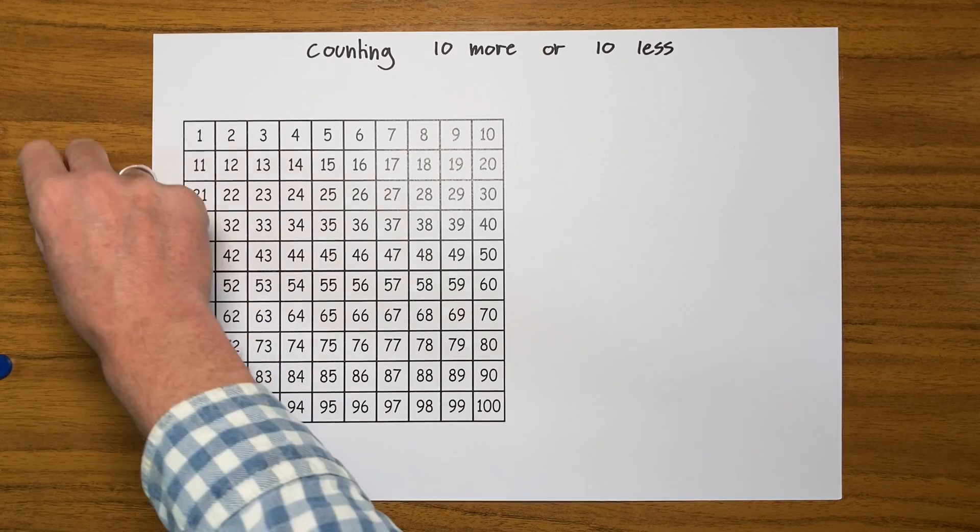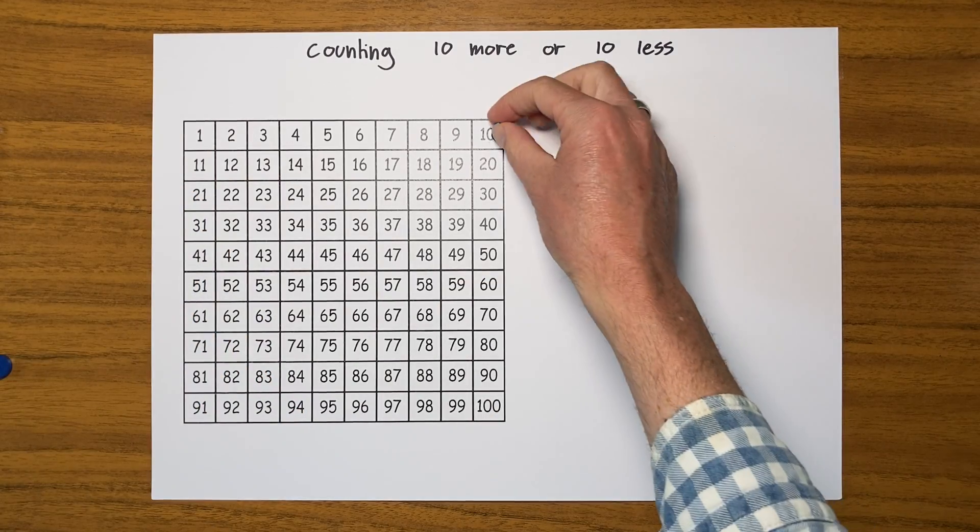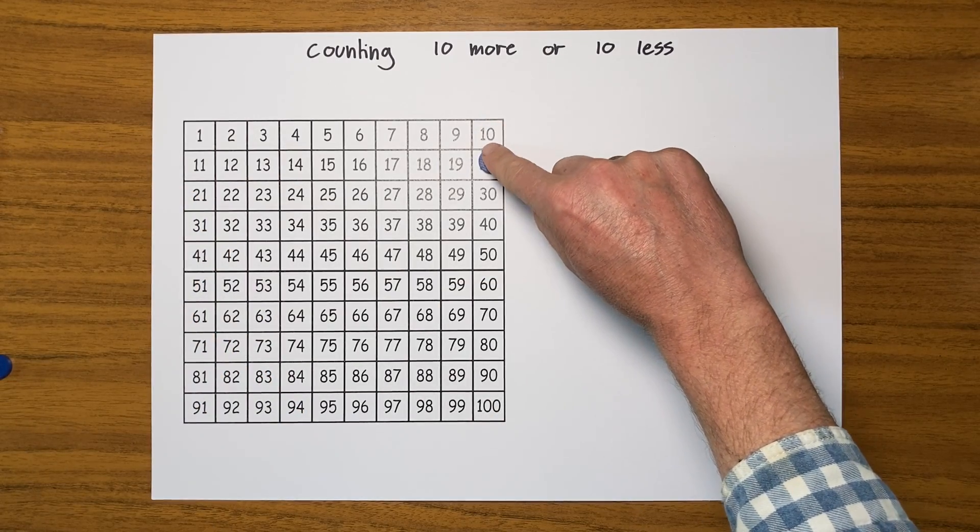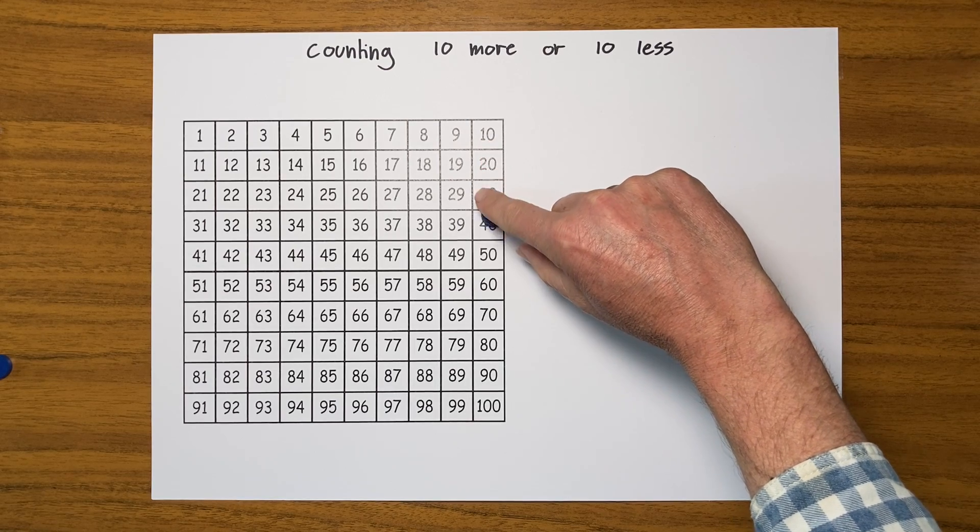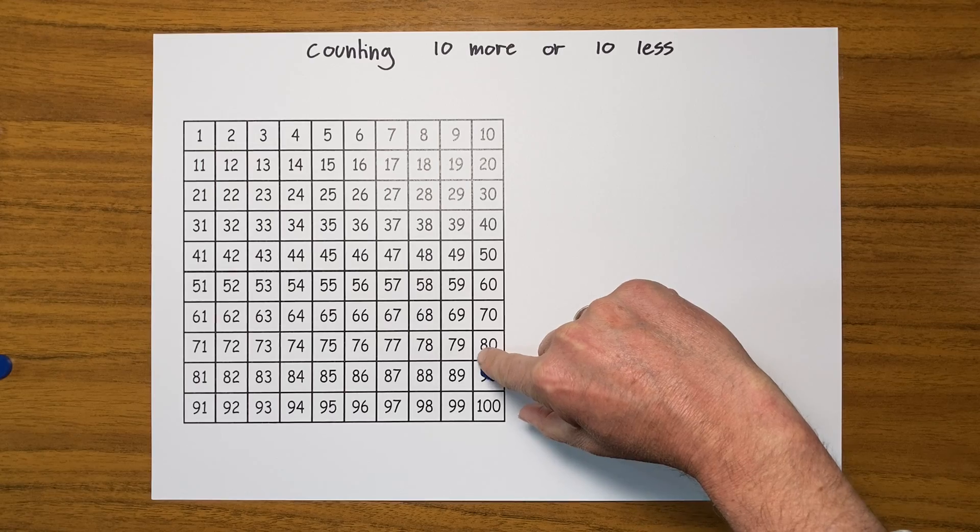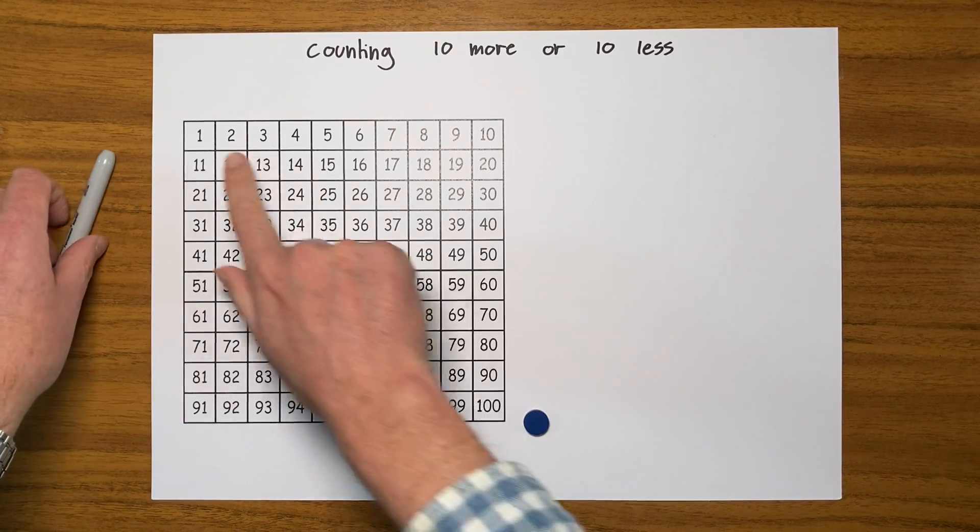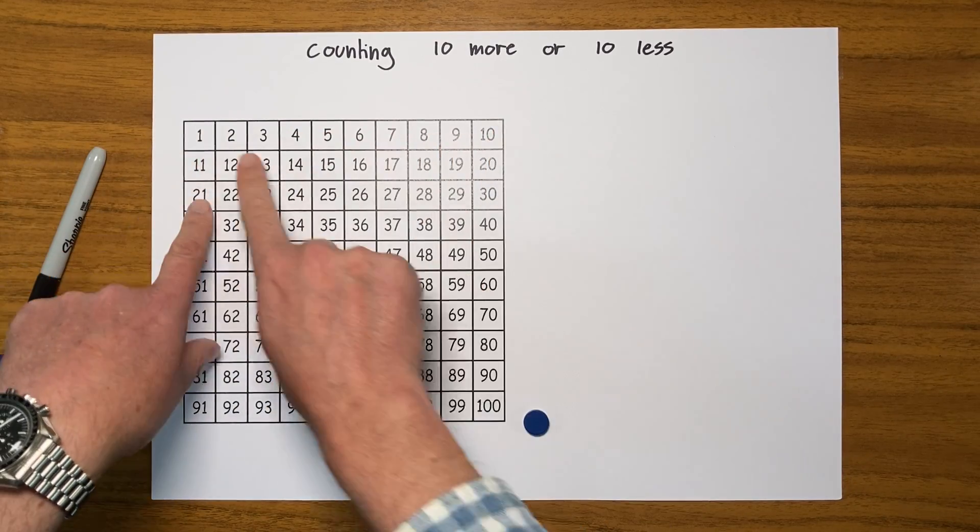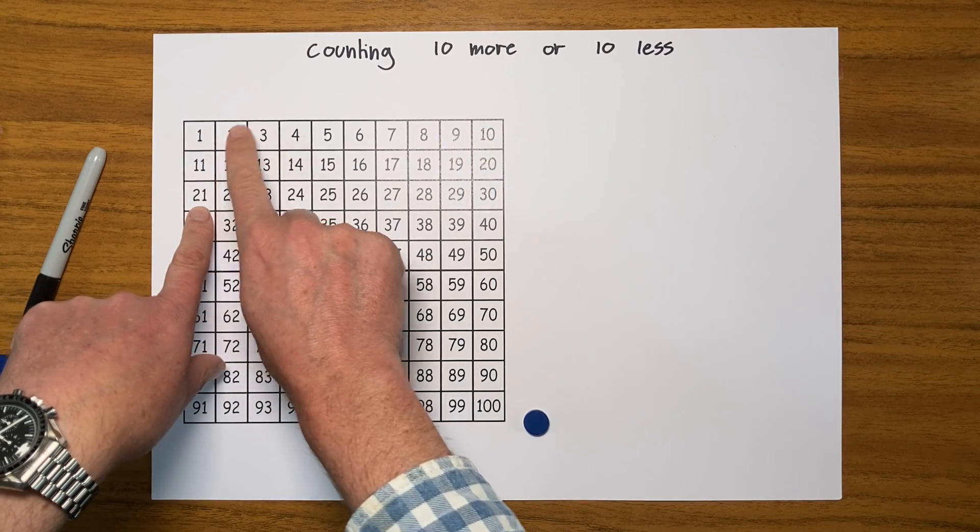I'm gonna get my counter and I would go 10, 20, 30, 40, 50, 60, 70, 80, 90, 100, because each one of these rows is 10. That is one lot of 10: 1, 2, 3, 4, 5, 6, 7, 8, 9, 10.